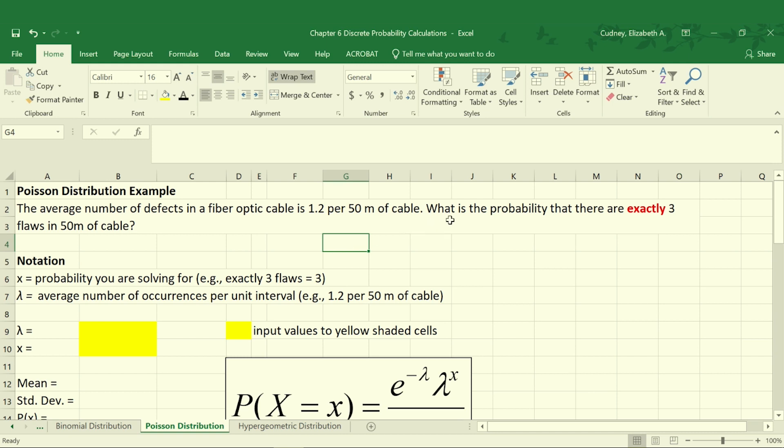In this example, then, we want to calculate the probability that there are exactly three flaws or defects in 50 meters of cable. We know that we're solving for three defects, and we know the average number of occurrences per unit interval. This is another sign that it's a Poisson distribution because we have an average for some unit interval. And in this case, the unit interval is for every 50 meters.